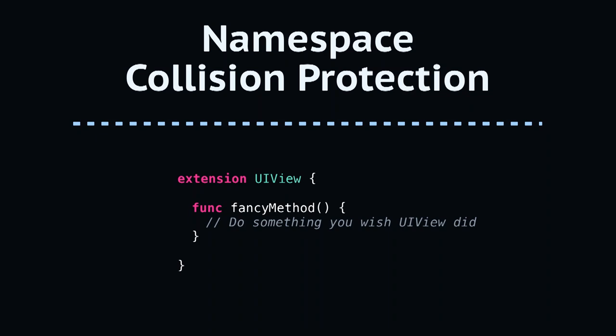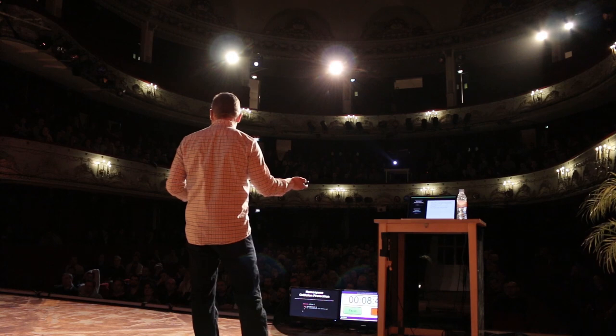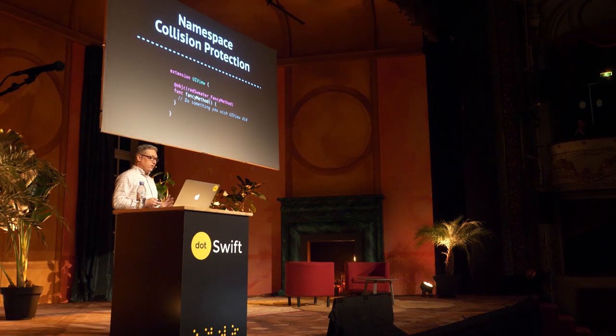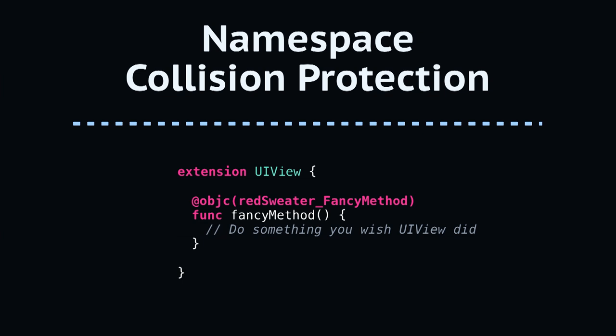A very common use case for this is preventing namespace collision in Objective-C. Since Objective-C uses method selectors which are just strings, if you extend a class like UIView and add a method, and later Apple or a third-party framework adds a method with the same name, the Objective-C runtime can't determine which to call. A trick for years in Objective-C has been to prefix method names, and you can do this easily with the @objc annotation.